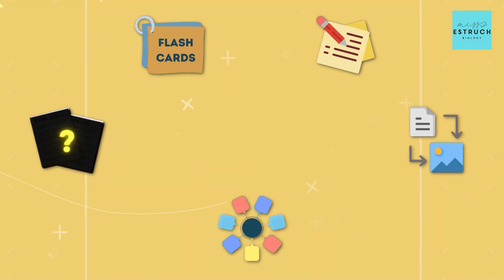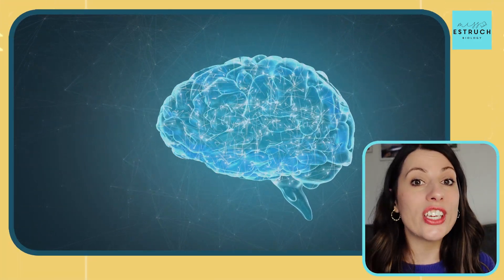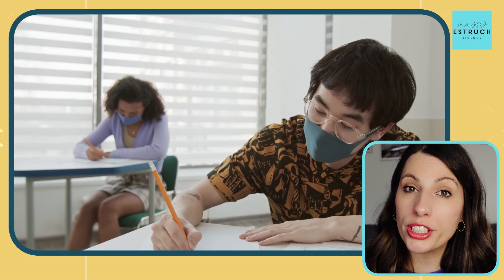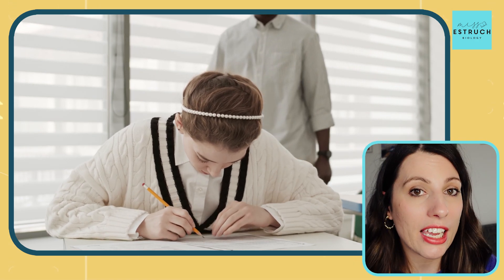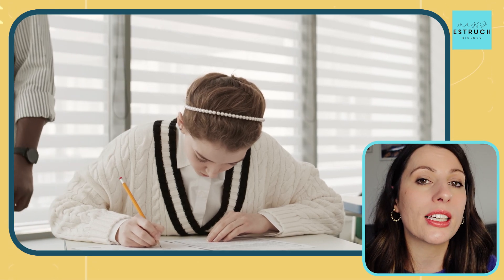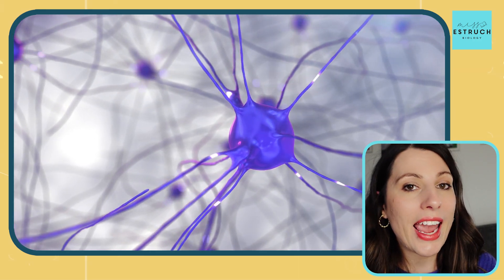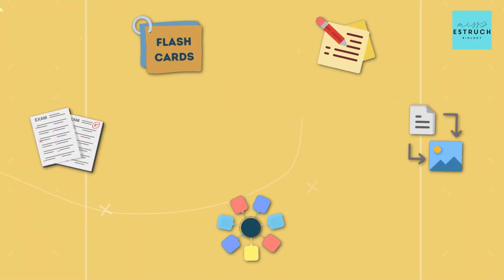Strategy number five is exam questions. This is where you draw it all together and check whether you've connected the neurons sufficiently to answer challenging application questions — which you can only do with thorough understanding. Make sure you have done activities one to four before attempting exam questions. To get the most out of them, be strict with timing because that is a major challenge in the real exam. When you mark, be really harsh and stick exactly to the mark scheme, just as AQA and other examiners will. Repeatedly seeing common marking points will strengthen neural pathways for key terms and build long-term memory.